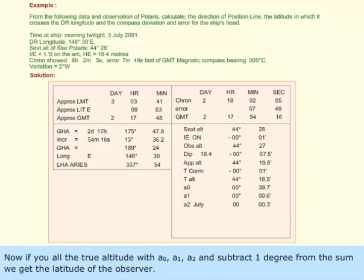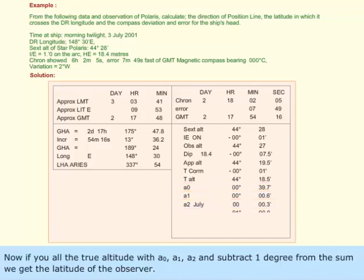If you add the true altitude with A0, A1, and A2, and subtract 1 degree from the sum, we get the latitude of the observer.